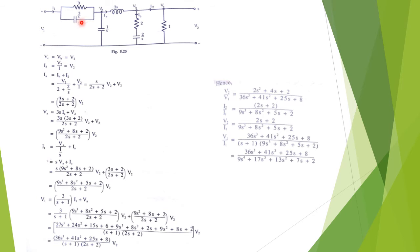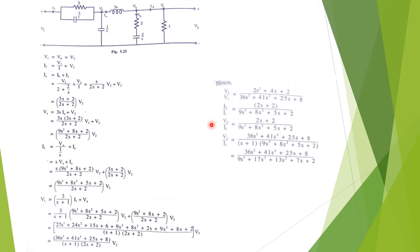Taking the ratio, we get the first network function: V2/I1 = (2s + 2) / (9s³ + 8s² + 5s + 2). For V1, the voltage V1 equals the drop across the parallel combination of 3 and 3/s, which gives equivalent impedance 3/(s+1), multiplied by I1, plus Va. So V1 = [3/(s+1)] · I1 + Va. Substituting I1 and Va in terms of V2, we get V1 in terms of V2.